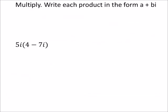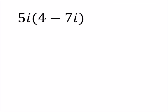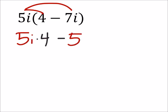So let's multiply these. Again, we're not looking for a conjugate here, but eventually we will. So let's go ahead and distribute this 5i into the parentheses. So I've got 5i times 4 minus 5i times 7i.